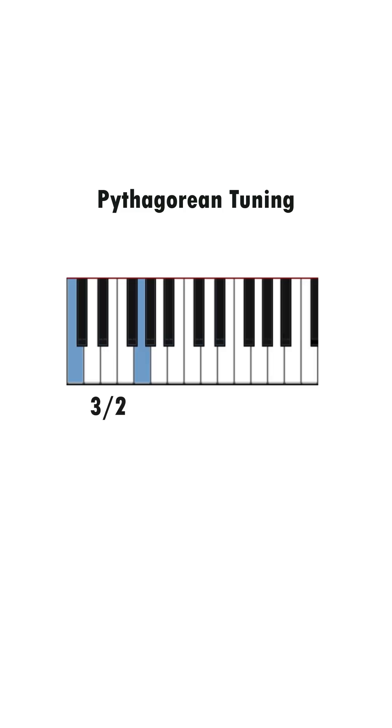Pythagorean tuning is a tuning system based on stacking fifths by the ratio 3 over 2. We'll start with a standard pitch that we call A4, and we'll make it our baseline pitch of 1.